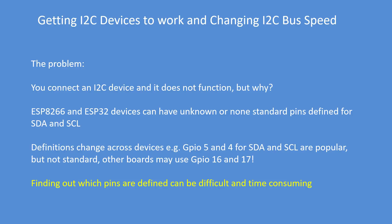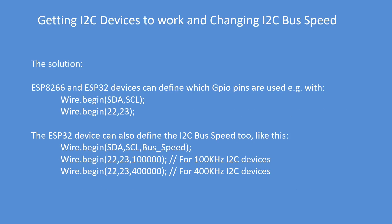Luckily, with the ESP8266 and ESP32 you can define which pins to use. You do that with Wire.begin(data, clock). Additionally, with the ESP32 you can define the bus speed with extra parameters — either 100,000 or 400,000 Hz.